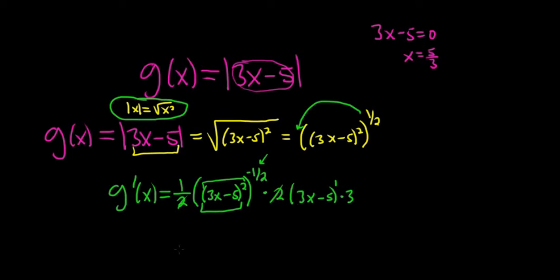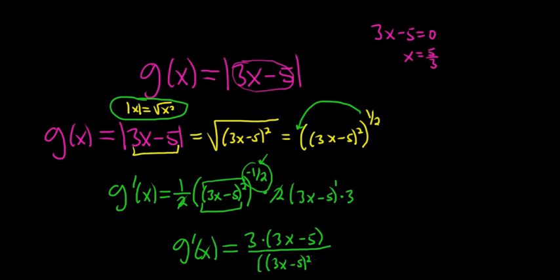The 2's cancel in this case. So we get g prime of x equals, I'm going to leave the 3 outside. So it's 3 times 3x minus 5 over, and what you can do is you can take this guy and you can bring it downstairs, and it becomes positive. So you end up with 3x minus 5 quantity squared, and all of this is to the 1 half power. So this is 3, 3x minus 5.